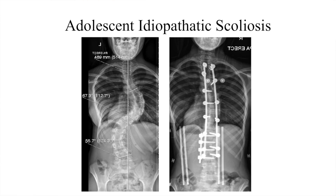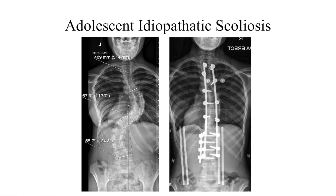In the adult population we see two types: patients who haven't been treated for an adolescent idiopathic curvature, and patients who've had what we call de novo degenerative scoliosis, which is just wear and tear that can also cause the same lateral curvature of the spine that happens in the paediatric population.